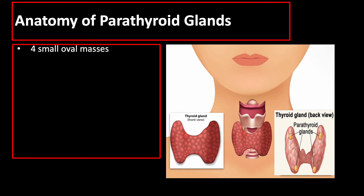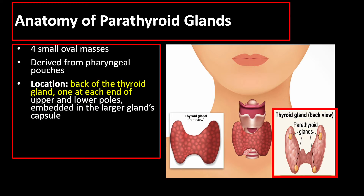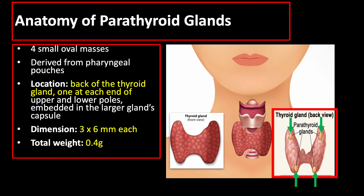The parathyroid glands are four small ovoid masses derived from pharyngeal pouches located at the back of the thyroid gland, one at each end of the upper poles and the lower poles embedded in the larger gland's capsule. Each measures 3 by 6 millimeters with a total weight of 0.4 grams.